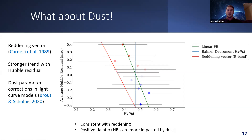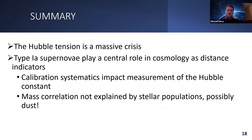In summary: the Hubble tension is a massive crisis in cosmology. Type 1a supernovae are extremely useful standardizable candles and improving them is beneficial. One area is calibration systematics — intrinsic scatter in the Hubble diagram or environmental correlations not properly accounted for. From our research, the mass correlation cannot currently be explained with stellar populations obtained from our OzDES spectra, but there does appear to be indication that dust has high importance going forward. Splitting up these dust impacts will ultimately help constrain calibration uncertainties.